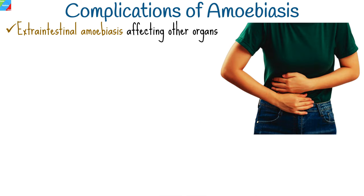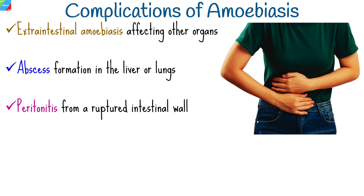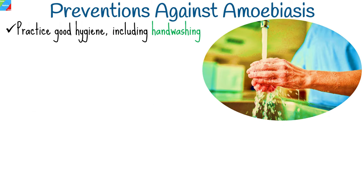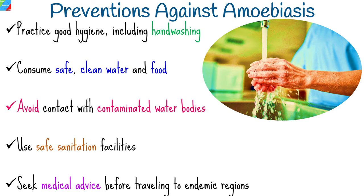Amoebiasis can lead to severe complications if left untreated, including extraintestinal amoebiasis affecting other organs, abscess formation in the liver or lungs, peritonitis from a ruptured intestinal wall, and colon complications like megacolon or toxic dilation. Preventing amoebiasis is possible through simple yet effective measures: practice good hygiene including hand washing, consume safe clean water and food, avoid contact with contaminated water bodies, use safe sanitation facilities, and seek medical advice before traveling to endemic regions.